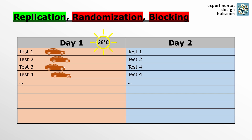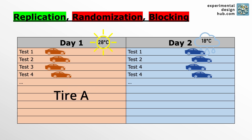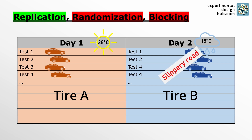The team won't be able to finish all the tests within one day, which means they have to split them over two days. And this could introduce a new variable like the weather, for example. Now if we assume that she tests tire A on day one and tire B on day two and it rains on day two, the results for tire B might be worse just because of the wet conditions — and that wouldn't be a fair comparison.